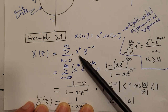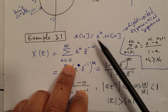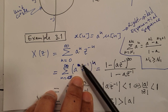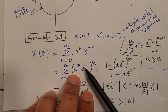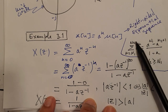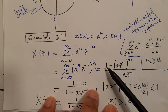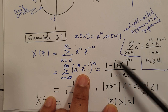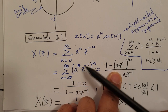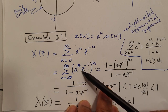When we apply the Z-transform to this sequence, we just plug it in. We change the limits accordingly because we are starting at zero and going to infinity. We can rewrite this as a single power where the base is a times z to the minus one. Applying the geometric series relationship, we get the base raised to the lower limit — zero — so that term is 1, and raised to the power of infinity plus one, which is infinity, divided by one minus a times z to the minus one.